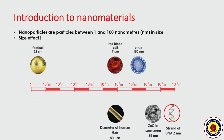Let us look into the nanomaterials. What are nanoparticles? Particles of size between 1 to 100 nanometers are called nanoparticles. We focus on the sizing effect of different objects: the size of a football is 22 centimeters, red blood cell is 7 micrometers, a virus is 150 nanometers, human hair is 80 micrometers, zinc oxide in sunscreen lotion is 35 nanometers, and a strand of DNA is 2 nanometers.